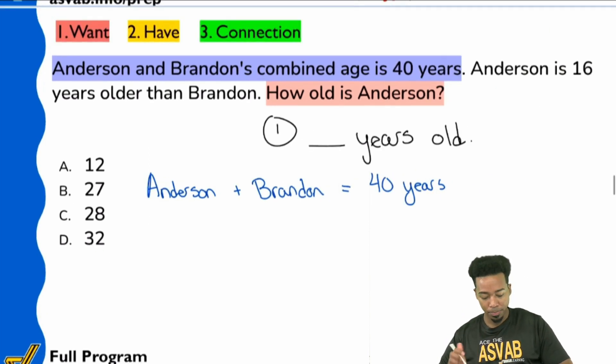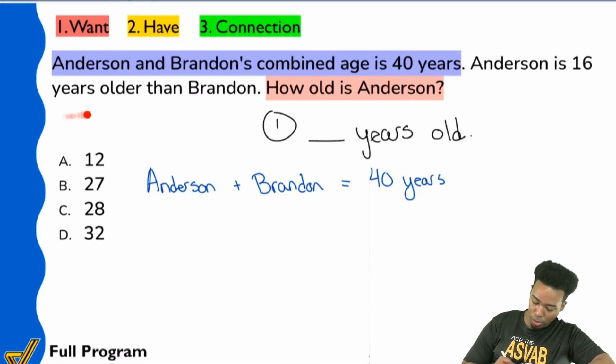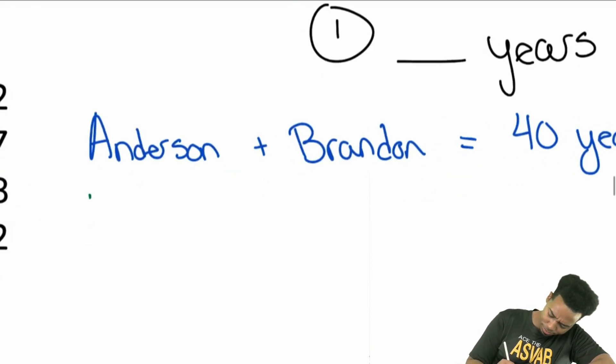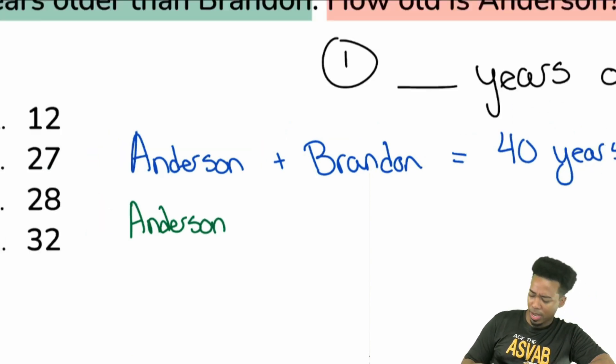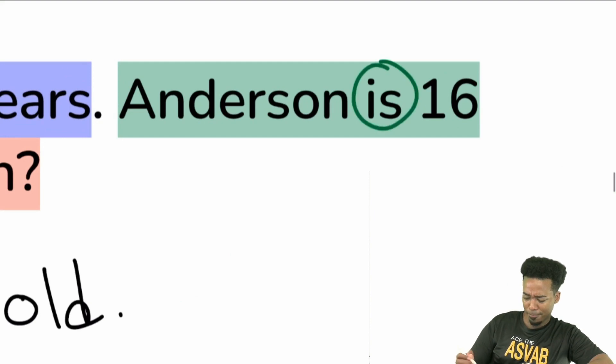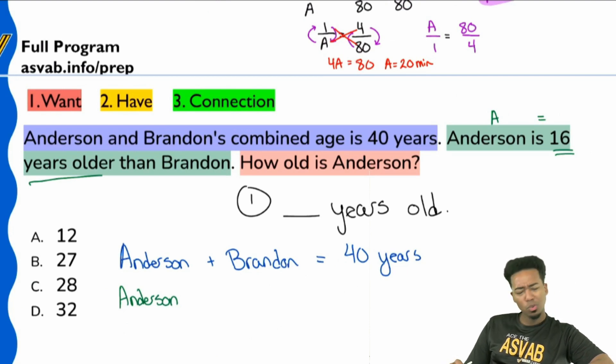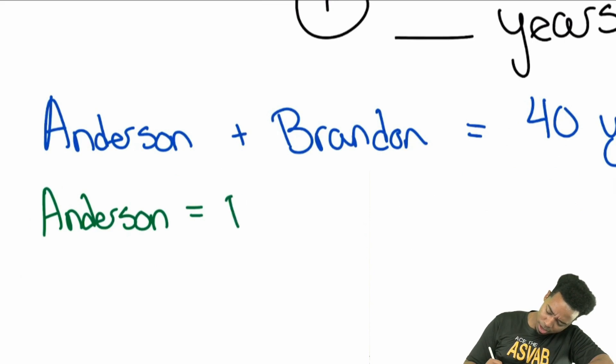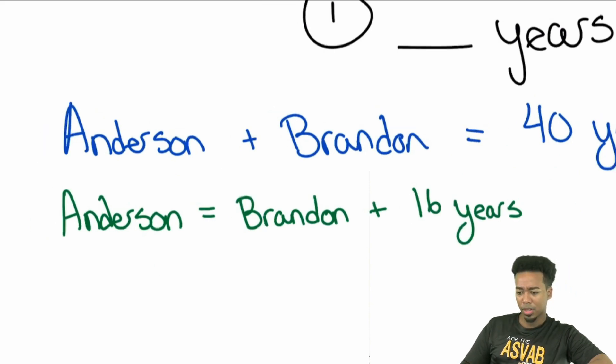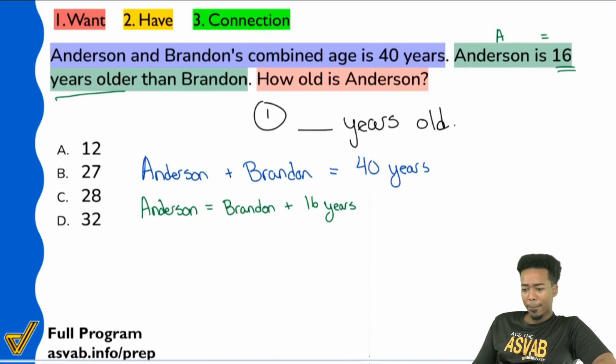Now, the next thing is, hey, Anderson is 16 years older than Brandon. Let's turn that into math really quick here. So Anderson, the word is, what does that typically mean in math? Yeah, that's an equal symbol. And then it says 16 years older than Brandon. So wouldn't that mean that Anderson equals Brandon plus 16 years? Isn't that what that means? All right, great. So with that said, we have ourselves a system. That's what a system of equations is.